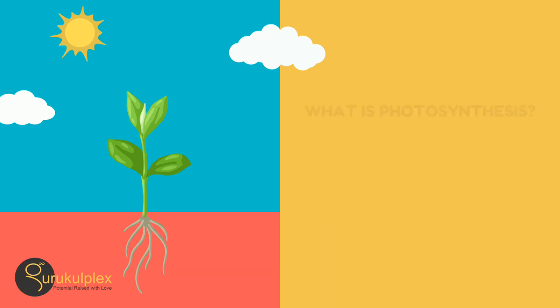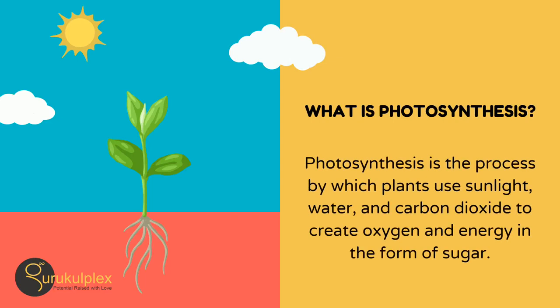Photosynthesis is a vital process that enables plants to generate energy and oxygen. Plants take advantage of sunlight to combine water and carbon dioxide and generate energy in the form of sugar. This process is essential to all living creatures on Earth, as it not only provides an energy source but also maintains oxygen levels.